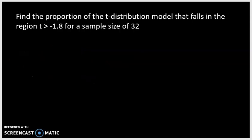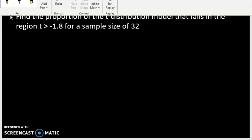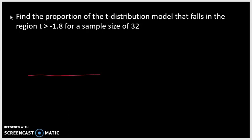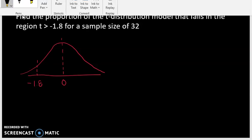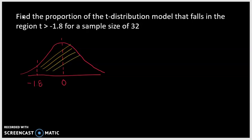Our third problem on reading the t-table deals with negative t-scores. Start out with a graph. The problem says: what proportion of the t-distribution model falls in the region where t is greater than negative 1.8? The mean is 0, so negative 1.8 would be somewhere less than the mean. You're looking for the region of the t-distribution model that is greater than negative 1.8 — so all of this upper region.